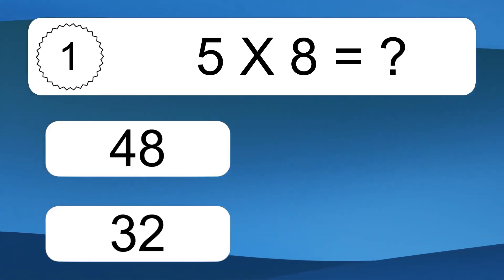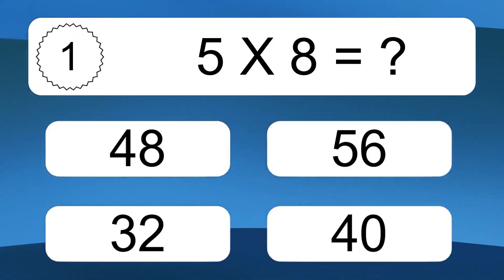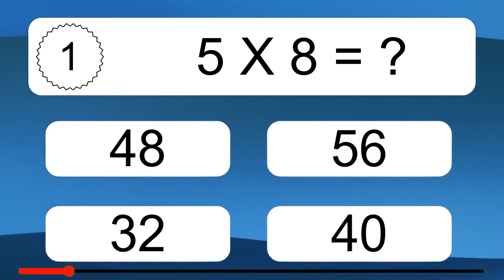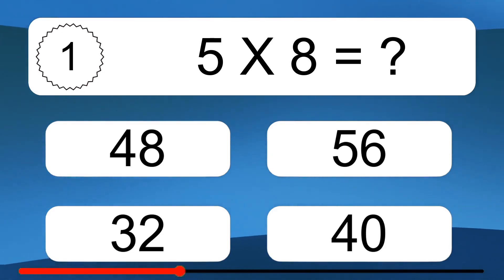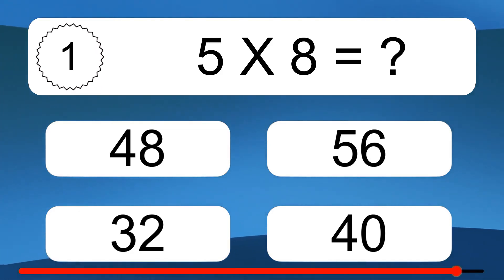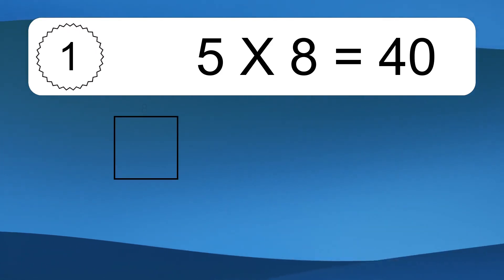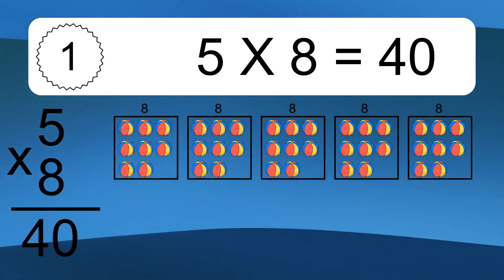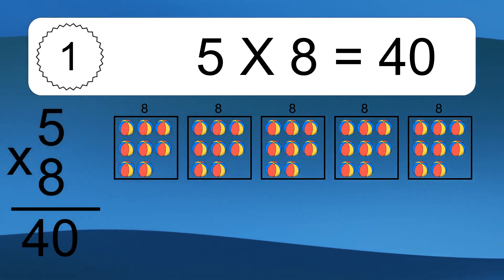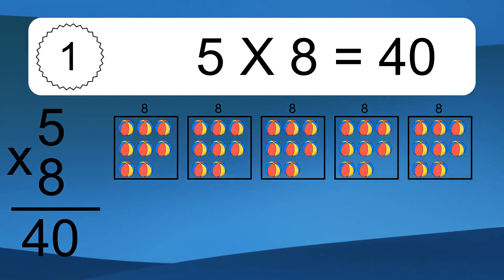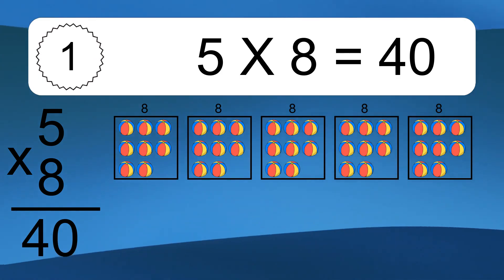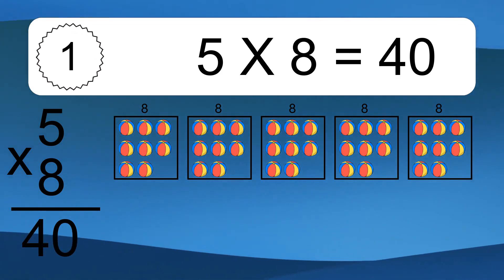5 times 8 equals what? 5 times 8 equals 40. We have 5 boxes, and each box has 8 colorful balls inside. If you count all the balls in all the boxes together, you will have 5 times 8 balls. This equals 40 balls.